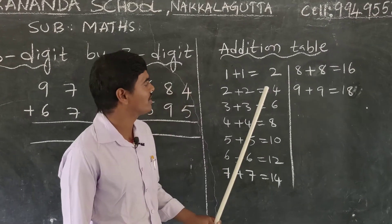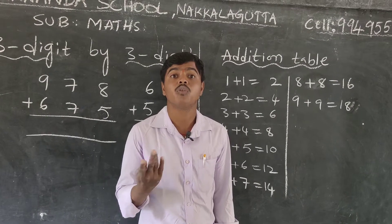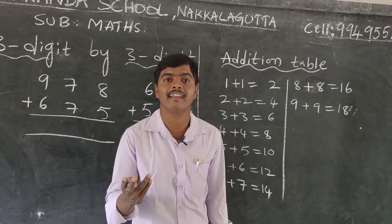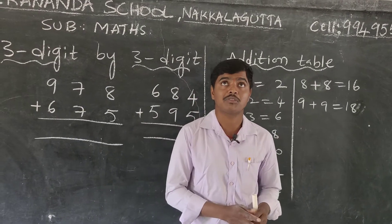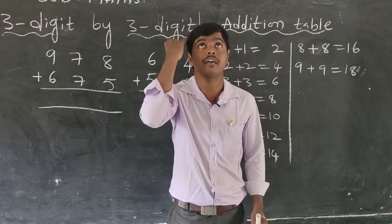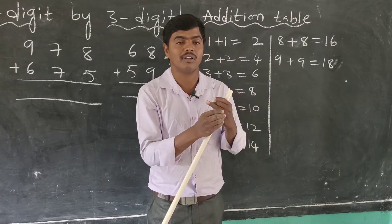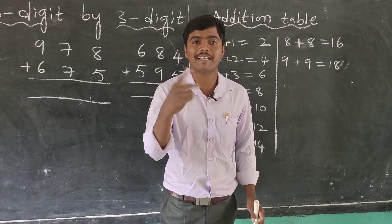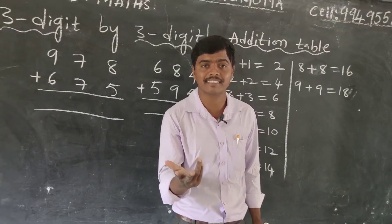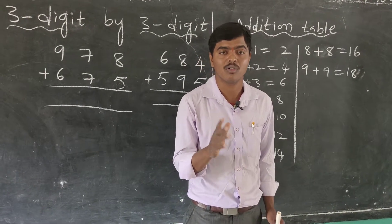The addition table is very, very important. For example, 6+6: keep 6 in mind, then count on 6 numbers after — 7, 8, 9, 10, 11, 12. So 6+6=12. Similarly, 7+7=14, 8+8=16, 9+9=18. That's how it works.